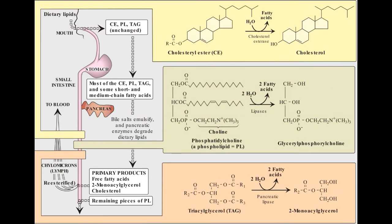Digestion, Absorption, Secretion, and Utilization of Dietary Lipids. The average daily intake of lipids by U.S. adults is about 81 grams, of which more than 90% is normally triacylglycerol (TAG), formerly called triglyceride. The remainder of the dietary lipids consists primarily of cholesterol, cholesterol esters, phospholipids, and unesterified (free) fatty acids. The digestion of dietary lipids is summarized in the picture.